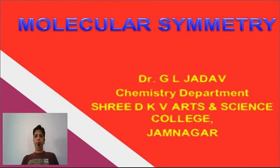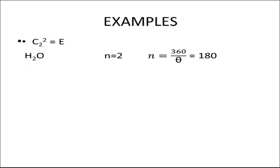Hello friends, in this video we are going to understand some examples. The first example is to prove Cn of n equals E for H2O. Here n equals 2 because theta is 180 degrees.